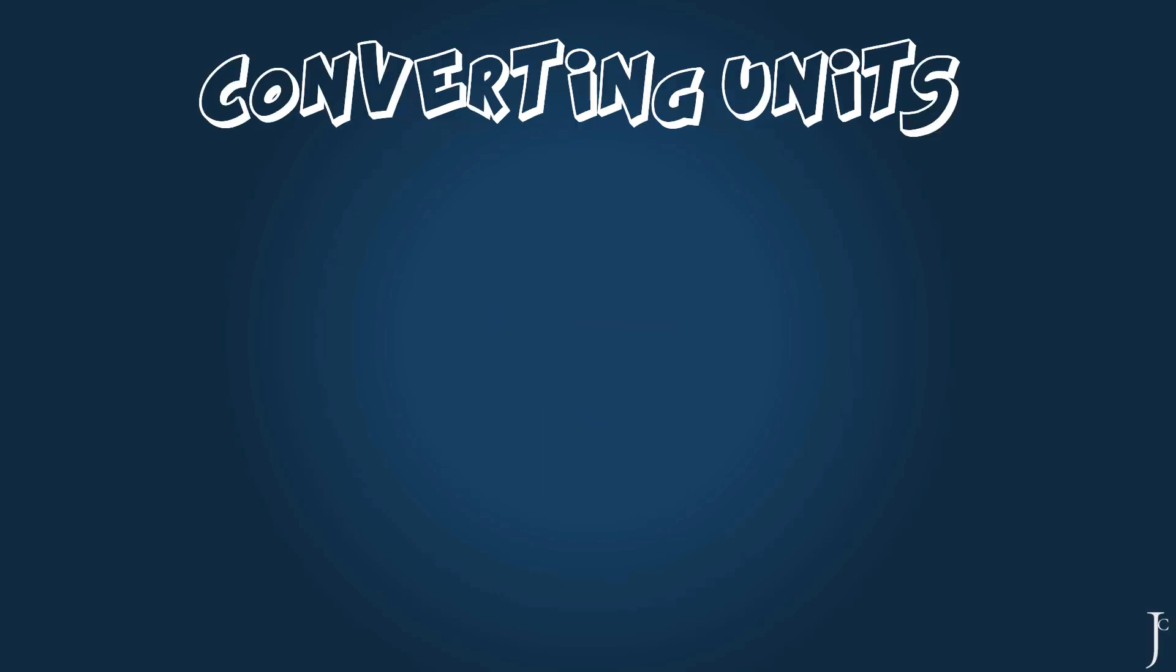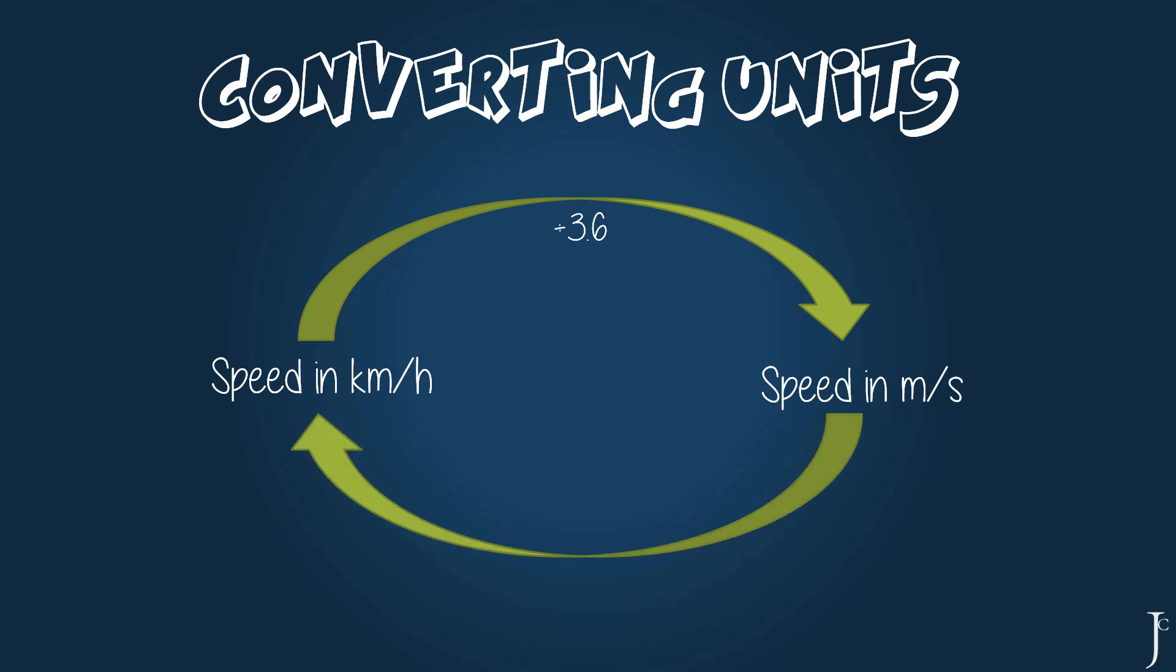Sometimes we'll be working with metres per second, and sometimes we'll be working with kilometres per hour. It is important that you are able to convert between the two. This is done by using the number 3.6. If you would like to convert a speed that is in kilometres per hour to metres per second, you simply need to divide the number by 3.6. Conversely, if you're going from metres per second to kilometres per hour, you simply need to times by 3.6.